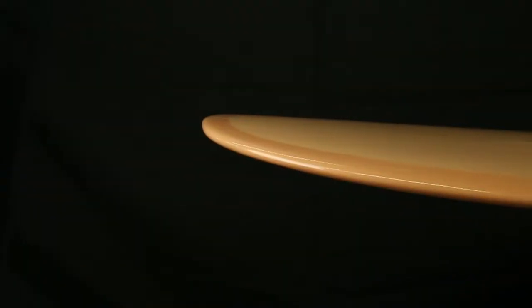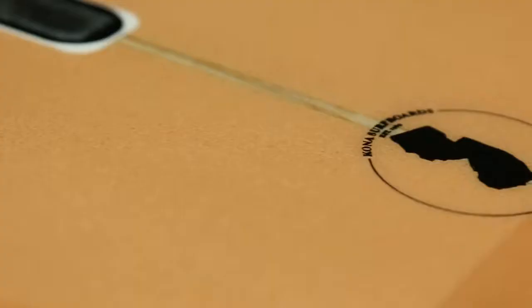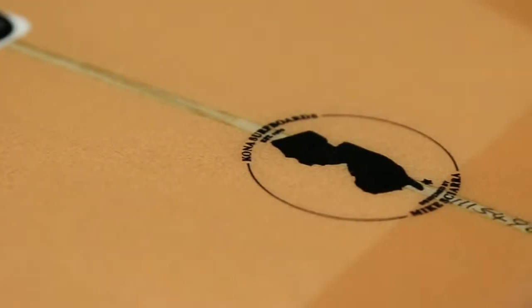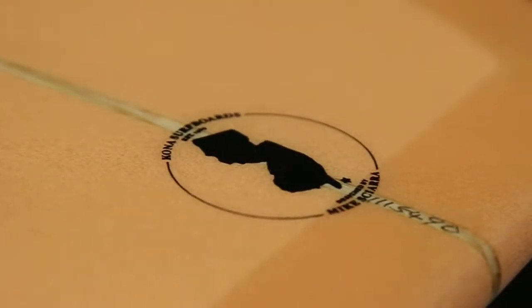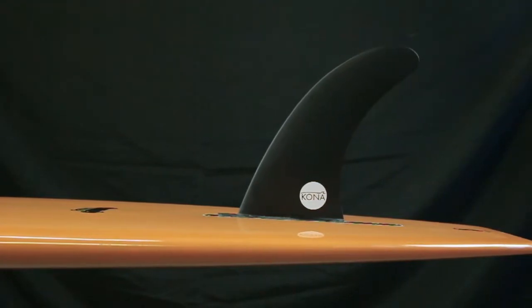The Cruiser has a low entry rocker that will give the rider down the line speed. The rails are 50-50 in the middle that transition to a pinched out rail in the tail.